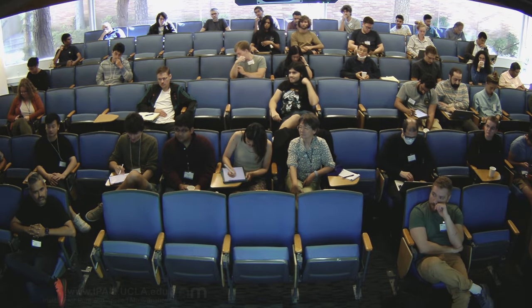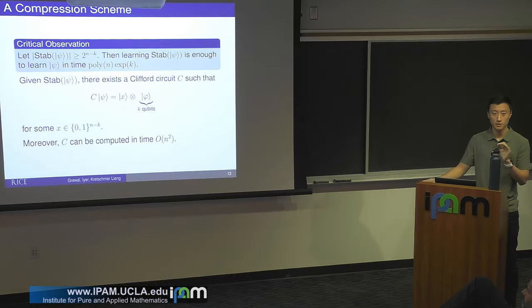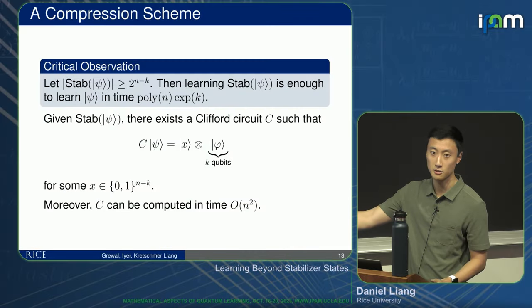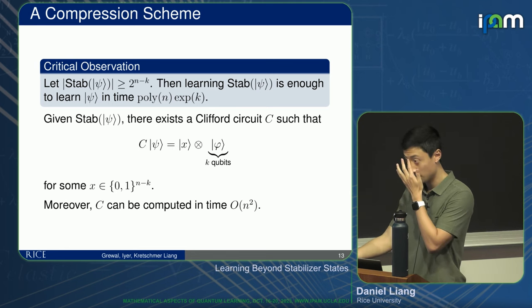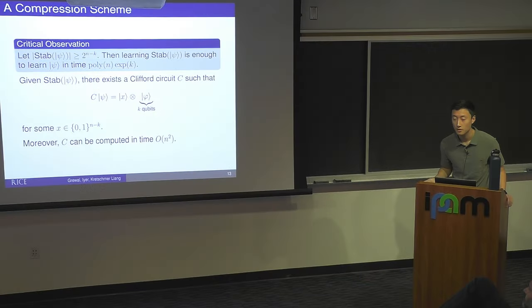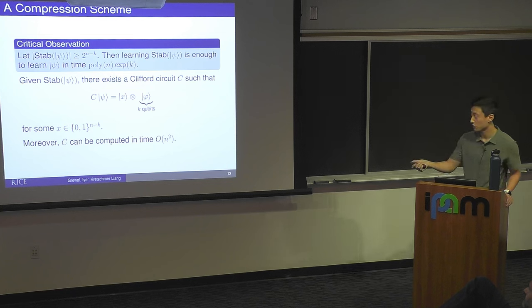On lower bounds: there aren't any strict lower bounds on the poly(n)·exp(k) form. I think you can almost surely get a better exponent constant for specifically Clifford-plus-log(n)-T-gate states, but if your state is something like |x⟩ ⊗ hard-random-state, you can't expect to do better. C is a Clifford circuit with no T gates — we've pushed all the T-gate action into the last k qubits. We make no assumptions about those qubits and just run pure state tomography.